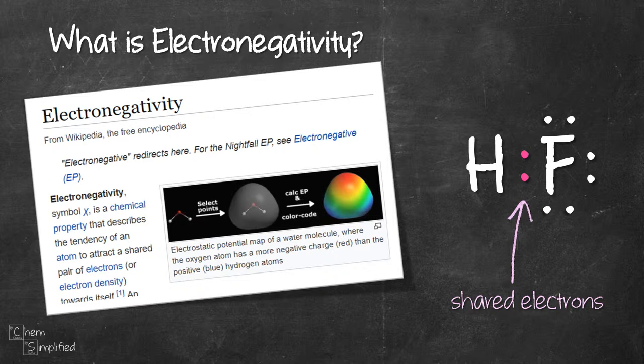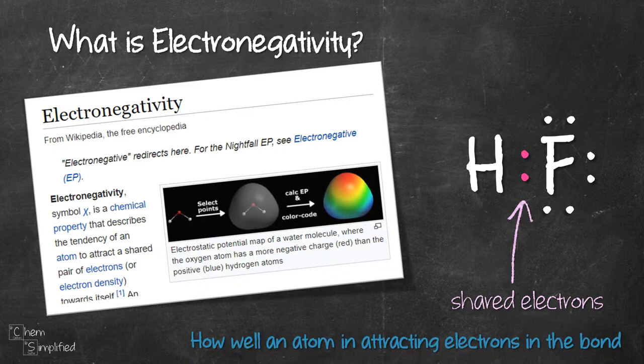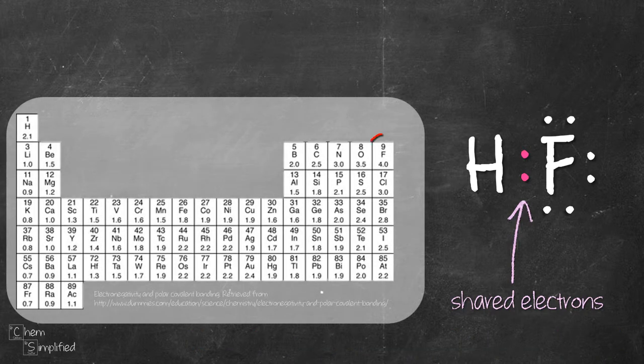Electronegativity of an atom tells you how well that atom can attract the shared electrons towards it. It is expressed in numbers. Fluorine F is the most electronegative element with a value of 4.0.